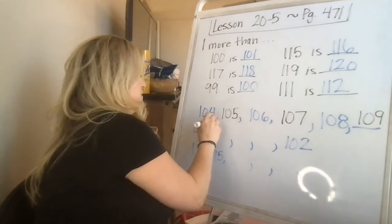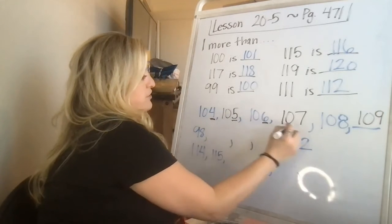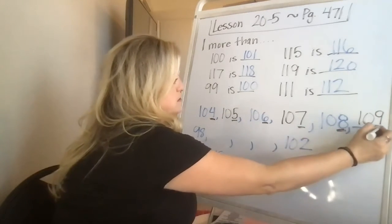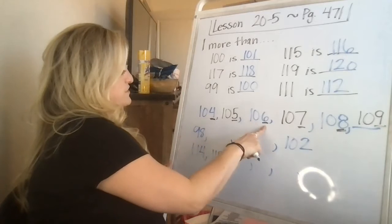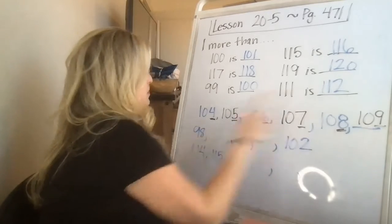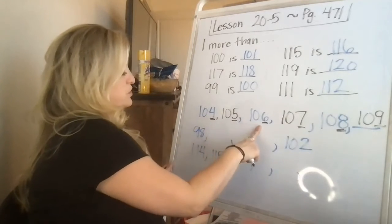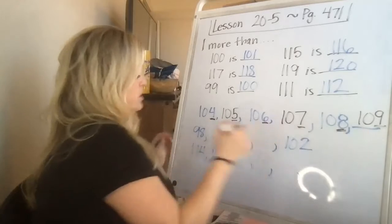If you remember from like one of our first videos, these should show like you're counting to 10, right? They just repeat. So you have 4, 5, 6, 7, 8, 9, 104, 105, 106, 107, 108, 109.